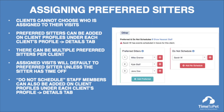Although clients cannot choose who their sitter will be for their service, you can set a list of preferred sitters on the client's profile. This will ensure that anytime the client sends a schedule request, the first preferred sitter listed will default to the assigned sitter on that event. If a preferred sitter has time off or is unavailable, the next preferred sitter listed will become the assigned sitter. You can also set 'do not schedule' staff members on a client's profile, which is useful if a client cannot work with a specific staff member for any reason.